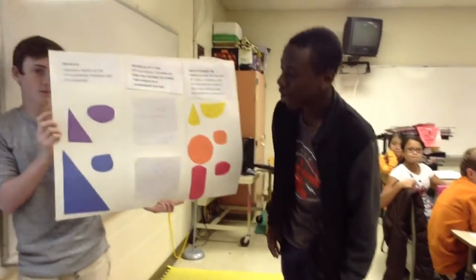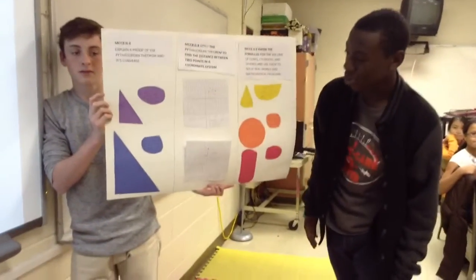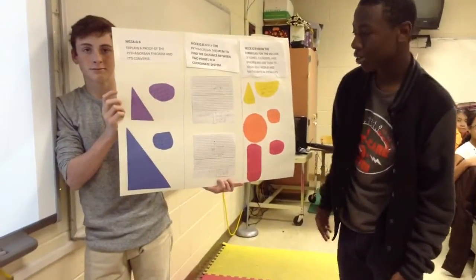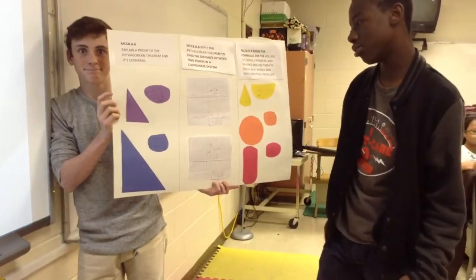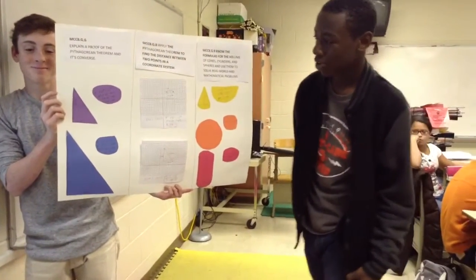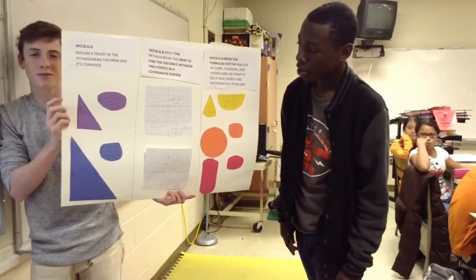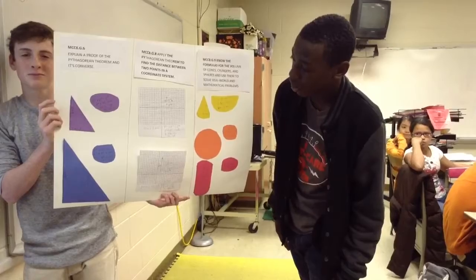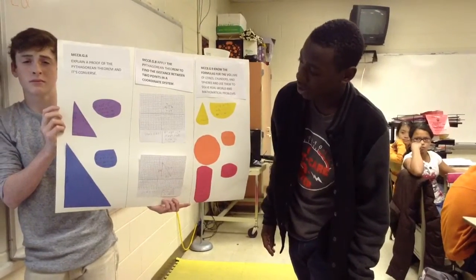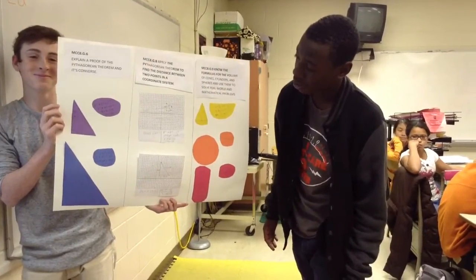I drew a triangle, and A equals 3 centimeters, B is 4 centimeters, and C is 5 centimeters. A squared plus B squared equals C squared. 3 squared plus 4 squared equals 5 squared, and that would be 9 plus 16 equals 25.